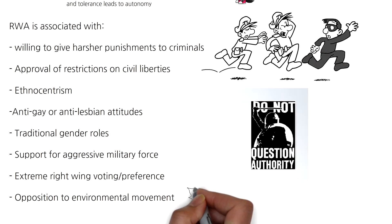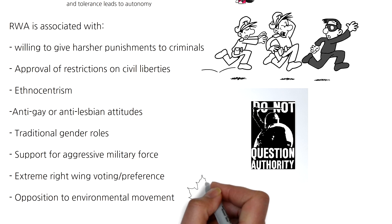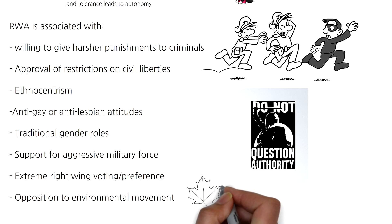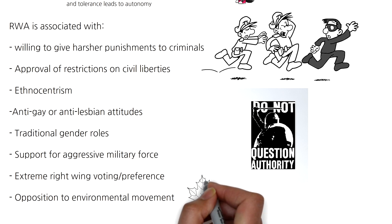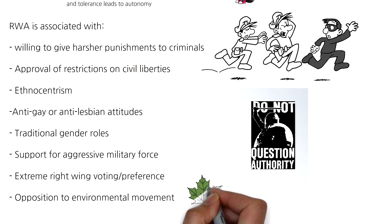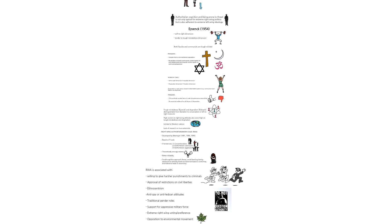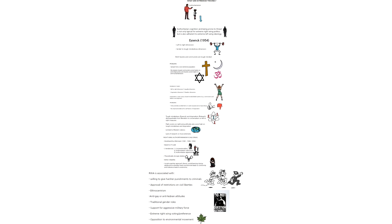RWA is also associated with ethnocentrism, anti-gay or anti-lesbian attitudes, traditional gender roles, support for aggressive military force, extreme right-wing voting and party preferences, and opposition to the environmental movement. I hope you've enjoyed this. In our next video, we're going to be looking at social dominance orientation before looking more into prejudice. Thank you, bye.